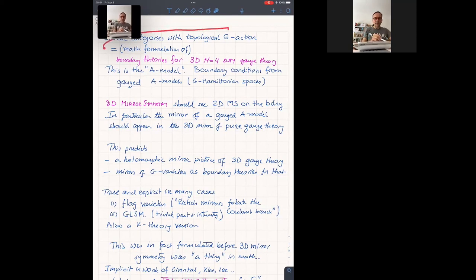So categories with topological group action, I think are a mathematical formulation of boundary theories for gauge theory in three dimensions. If I just said topological gauge theory will be almost tautological, but for reasons which at least to me are not so clear, the gauge theory seems to go with that in physics, that N equals 4 supersymmetric gauge theory. And the topological side corresponds to the A model of the mystery 3D mirror symmetry.